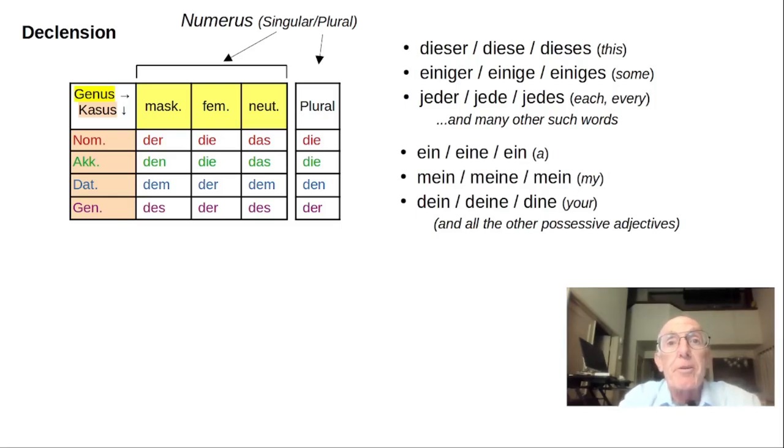The declension for the definite article is similar to the pattern for the indefinite article and possessive adjectives. And it's similar to the pattern you'll use for adjectives in general.